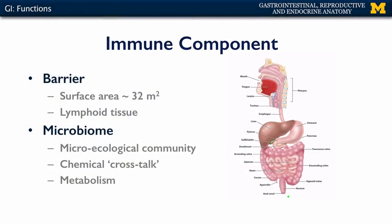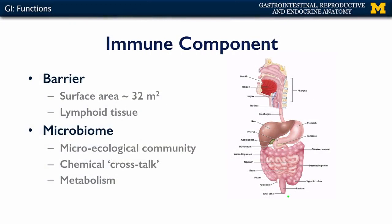There is also an immune component to the digestive system. You can think of the GI tract as a physical barrier between the outside — the stuff within the lumen — and the inside of the body. That space has a remarkably large surface area. From the mouth down to the anal canal, there is approximately 32 square meters of surface area, roughly twice the size of a parking space. Throughout the wall is embedded a lot of lymphoid tissue that hosts lymphocytes and various other cells capable of defending the body from any pathogenic material.